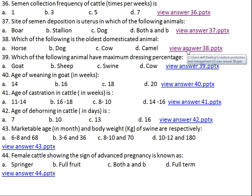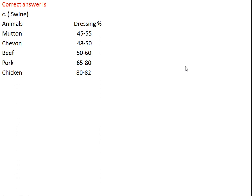Question number thirty-nine: which animal has the highest live-weight-to-edible-carcass dressing percentage? Option A: goat, Option B: sheep, Option C: swine, Option D: cow. The right answer is Option C, swine. The dressing percentage of chicken is highest at 80–82%, followed by pork at 65–80%, then beef 50–60%, chevon 48–50%, and the least is mutton at 45–55%.